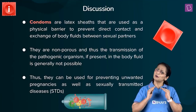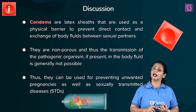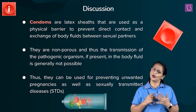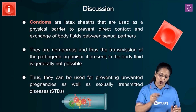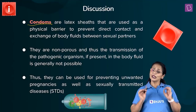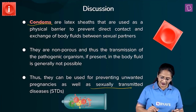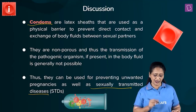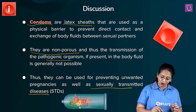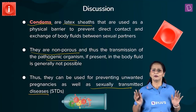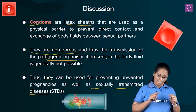All options listed are contraceptive methods. Contraception refers to methods adopted by a couple to prevent an unplanned or unwanted pregnancy, or to space pregnancies. There are natural, barrier, surgical, and chemical methods. Barrier methods work by preventing the sperm from meeting the ovum using a physical barrier. Condoms belong to the barrier method — and because condoms are made of non-porous latex, they also prevent transmission of the pathogen causing STDs.